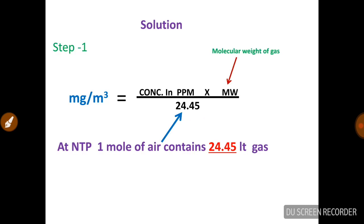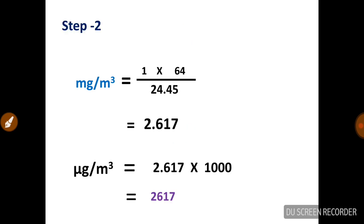We can convert PPM to milligram per meter cube by using this formula. Here 64 is the molecular weight of SO2. After solving this equation,